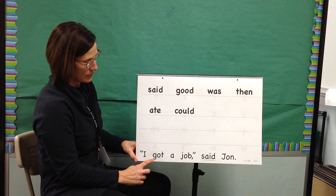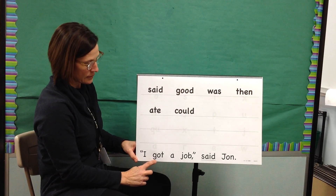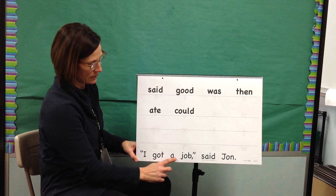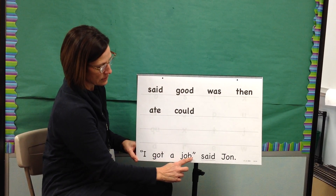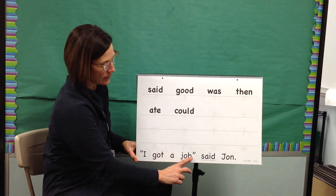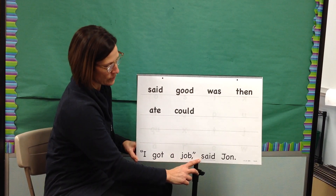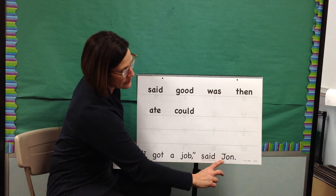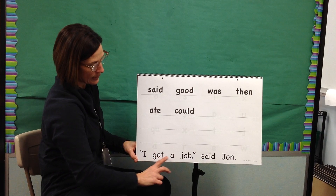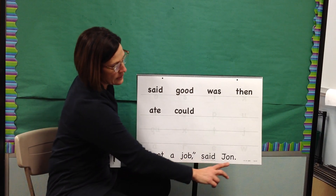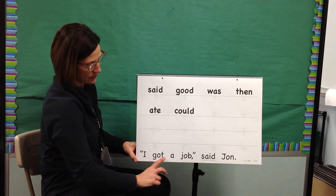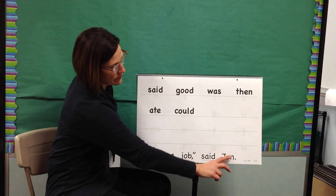Get ready for your sentence. Word: I. Blend: got. Word: got. Word: a. Blend: job. Word: job. My turn: I got a job. Word: said. Word: John. My turn: I got a job, said John. Your turn: I got a job, said John.